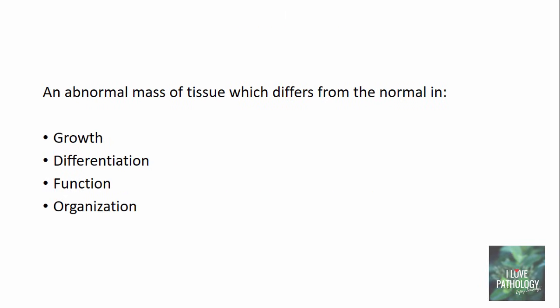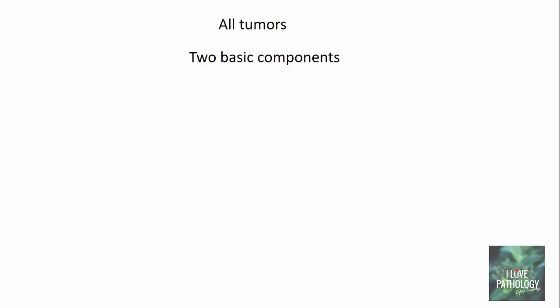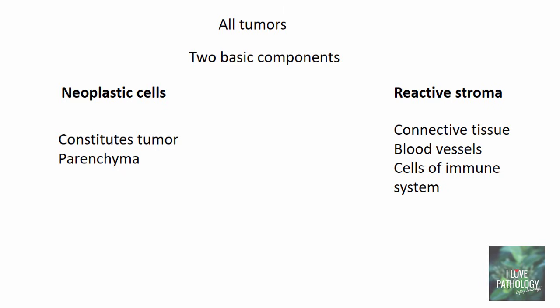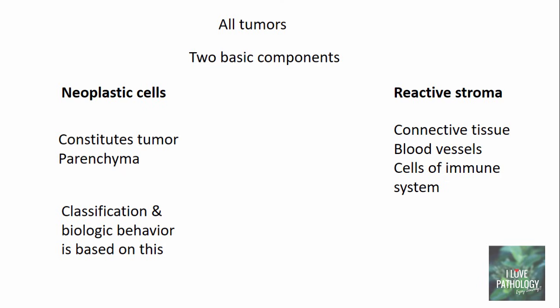We need to understand that this abnormal mass of tissue differs from normal tissue in terms of its growth, differentiation, function, and organization. All tumors have two basic components: one, the neoplastic cells, and two, the reactive stroma. The neoplastic cells constitute the tumor parenchyma, whereas the reactive stroma is composed of connective tissue, blood vessels, and cells of the immune system — both innate and adaptive. The classification and biological behavior of tumors is based on the type of neoplastic cells, whereas the growth and spread of the tumor is dependent on the stroma.